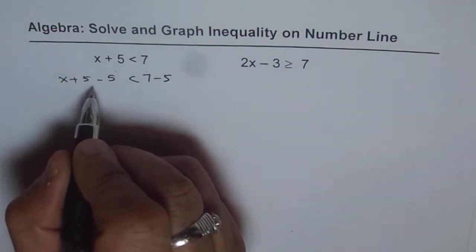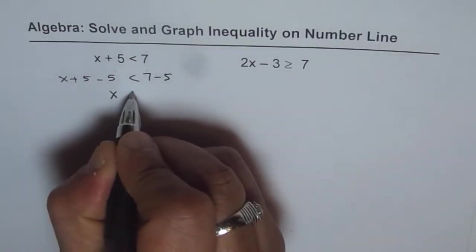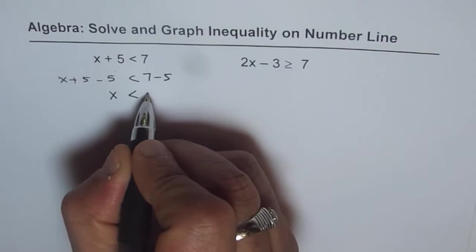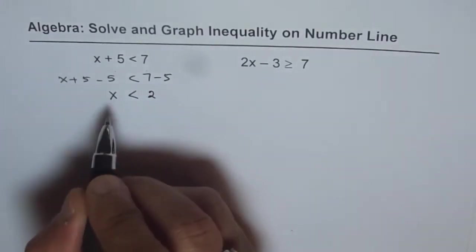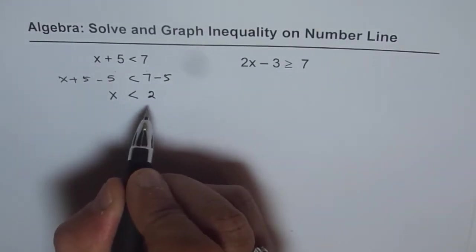So we have x plus 5 take away 5 from both sides less than 7 minus 5. Now, x plus 5 minus 5 is x, which is less than 7 minus 5, which is 2. So x is less than 2 is our solution.